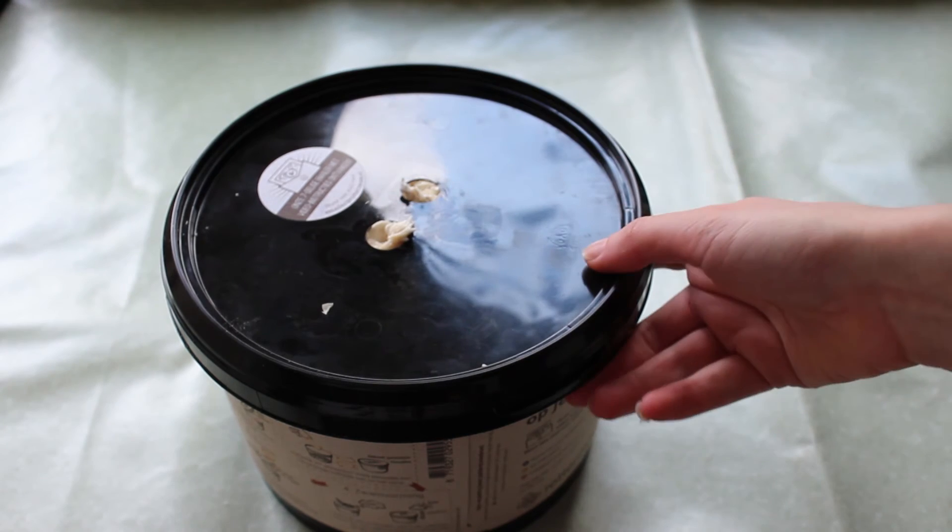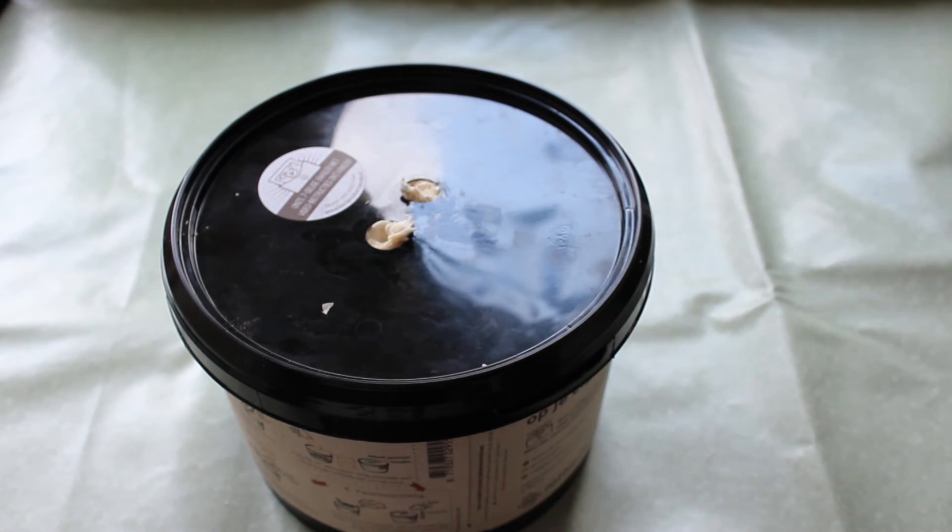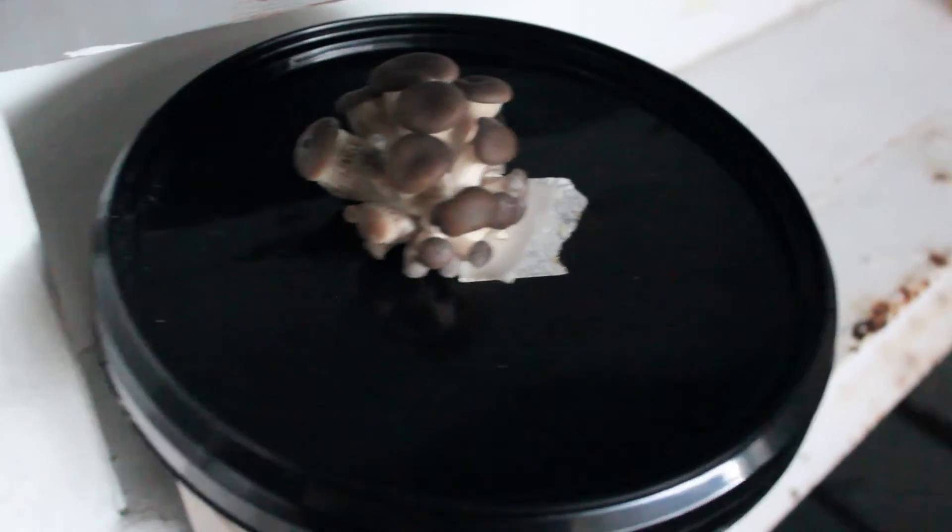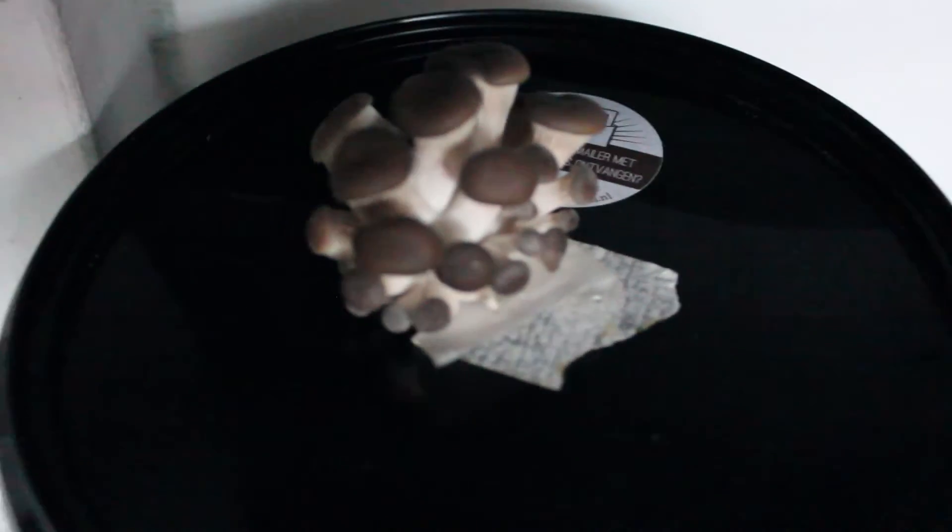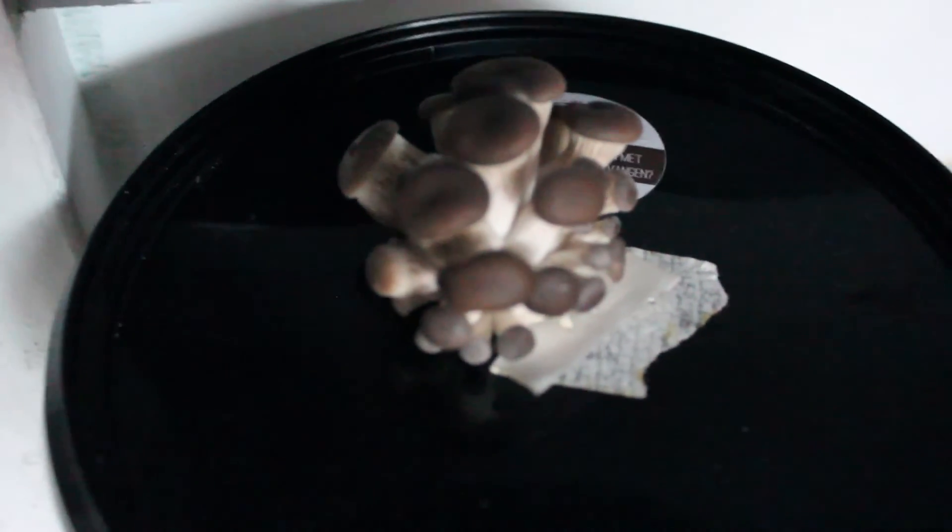Remove the pieces of mushroom at the opening with a knife. Give your grow kit a little water and at least another harvest will follow in two weeks.